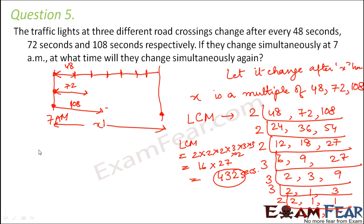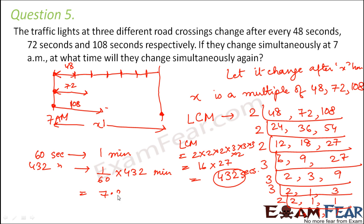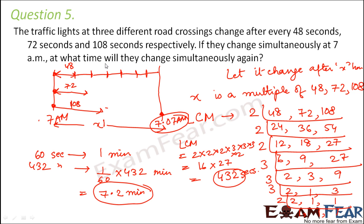432 seconds would be how many minutes? Since 60 seconds make 1 minute, 432 seconds equals 432/60 = 7.2 minutes. So if they changed together at 7 AM, the next time they change together is after 7.2 minutes — approximately 7 minutes, meaning the next simultaneous change is at 7:07 AM.